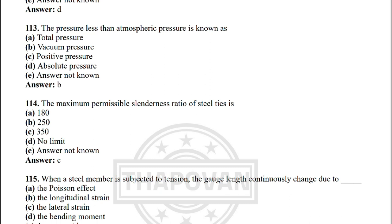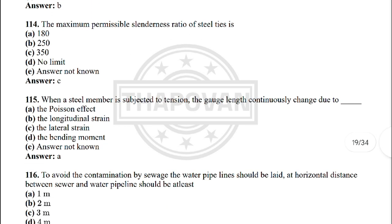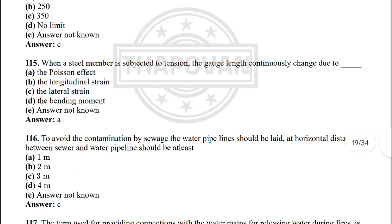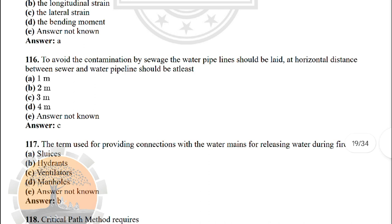Next: the maximum permissible slenderness ratio of a steel strut is — option C: 350. Next: when a steel member is subjected to tension, the gauge length continuously changes due to — the correct answer is option A: the Poisson effect.